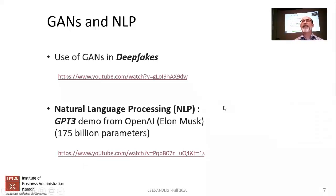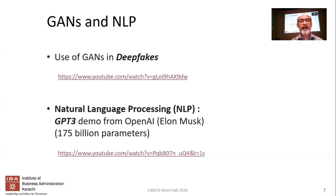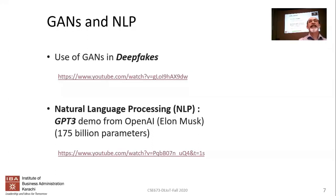Let me show you a third example of what natural language processing is capable of doing. We've heard of chatbots — we saw Eliza, one of the earliest chatbots from MIT, which was based on rules and had a lot of problems. But today this demo is based on what's referred to as GPT-3, created by OpenAI — the company owned by Elon Musk. In 2019 they created GPT-2, which had approximately 1 billion parameters.